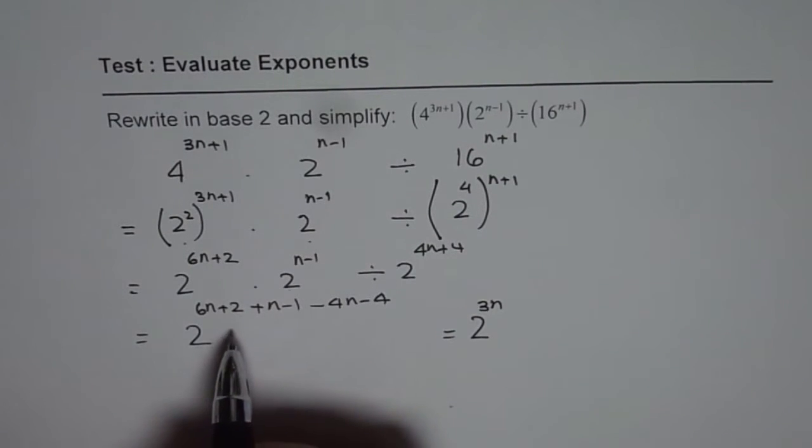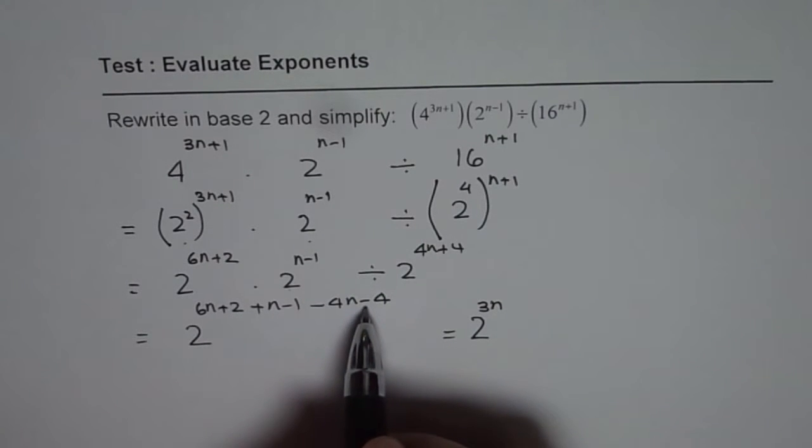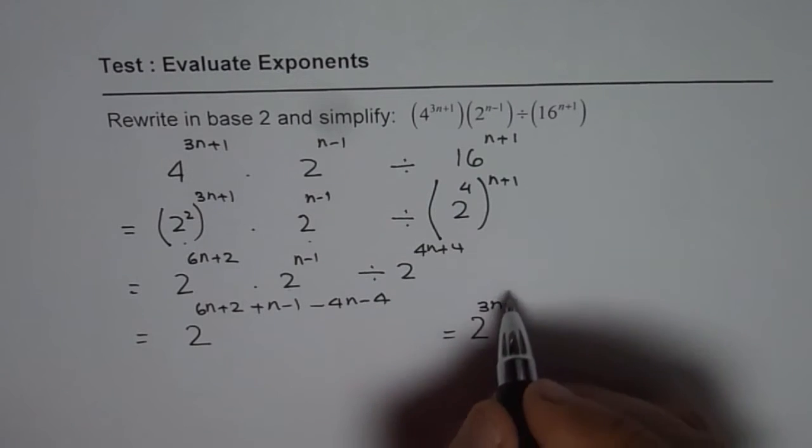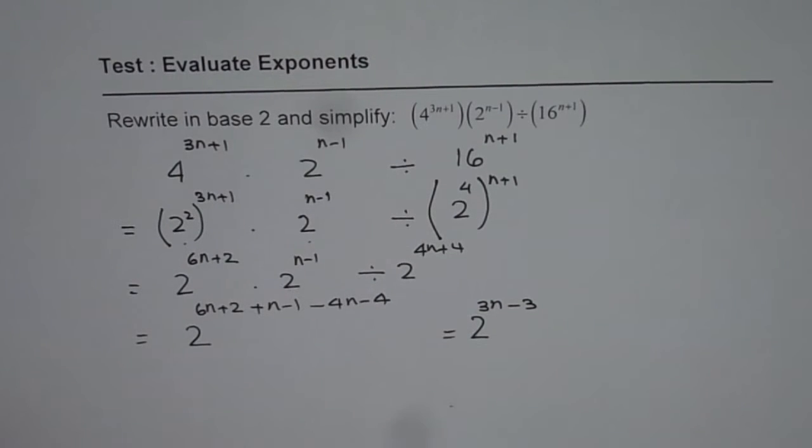And as far as the numbers are concerned, 2 minus 1 is 1, and 1 minus 4 is minus 3. So we get 2 to the power of 3n minus 3.